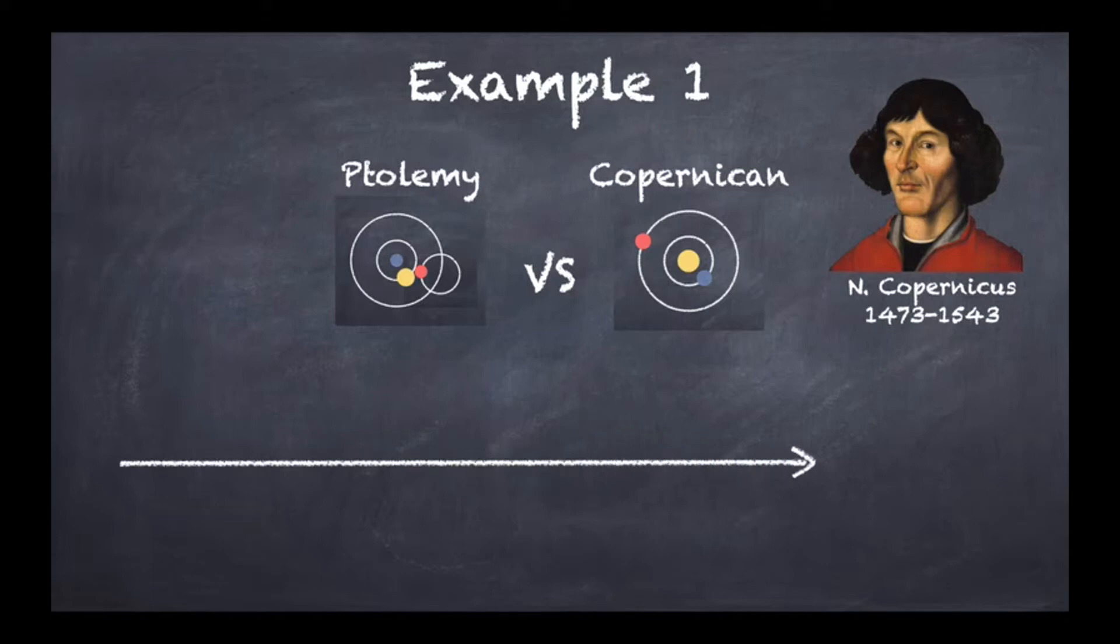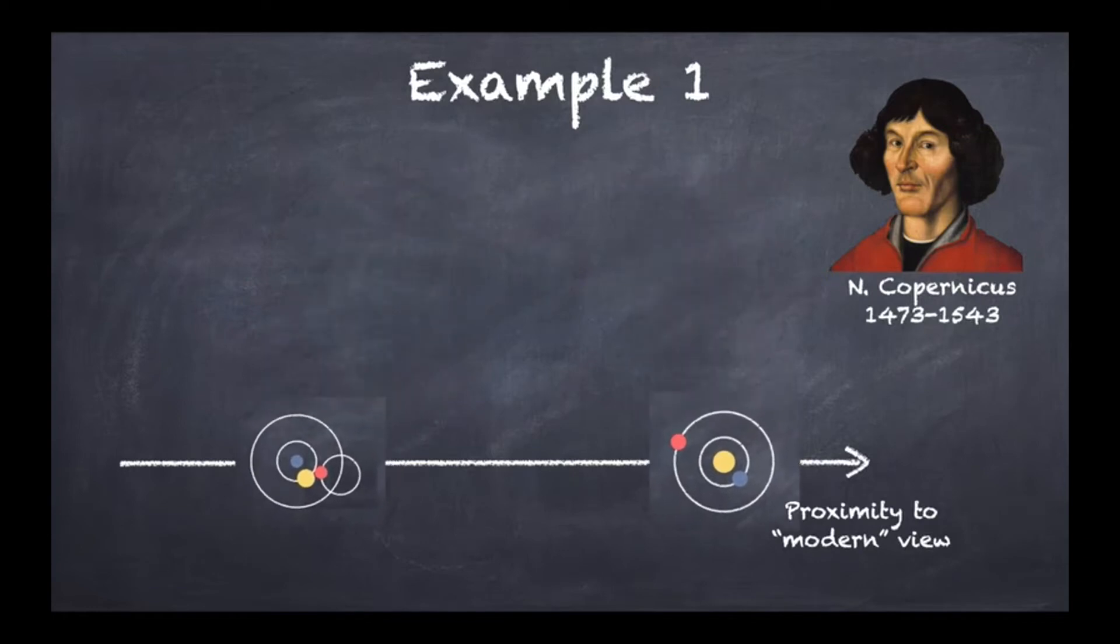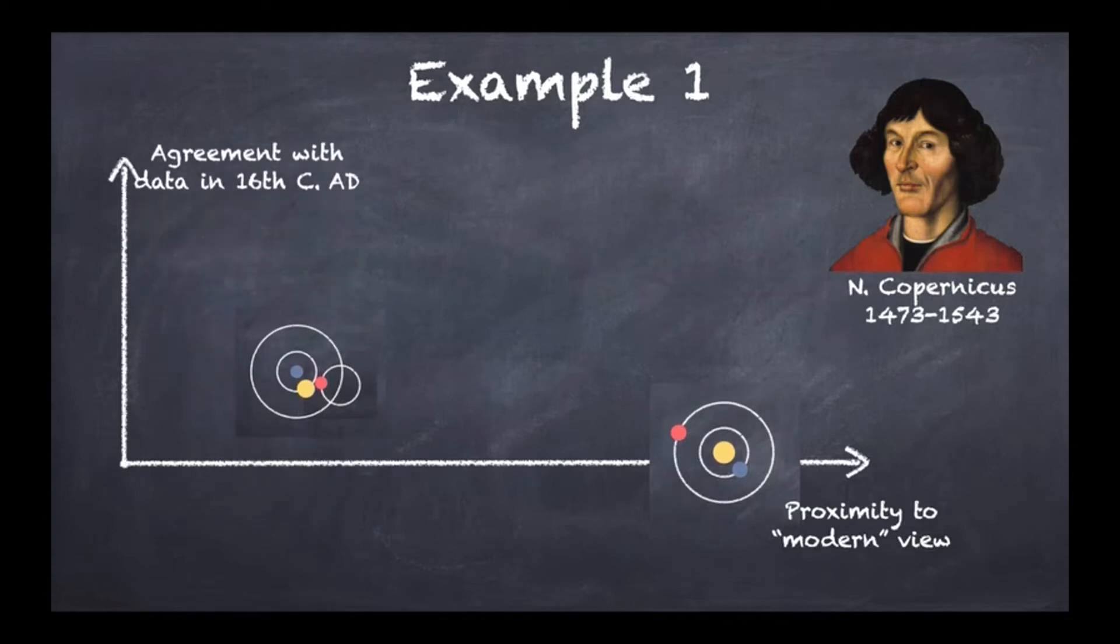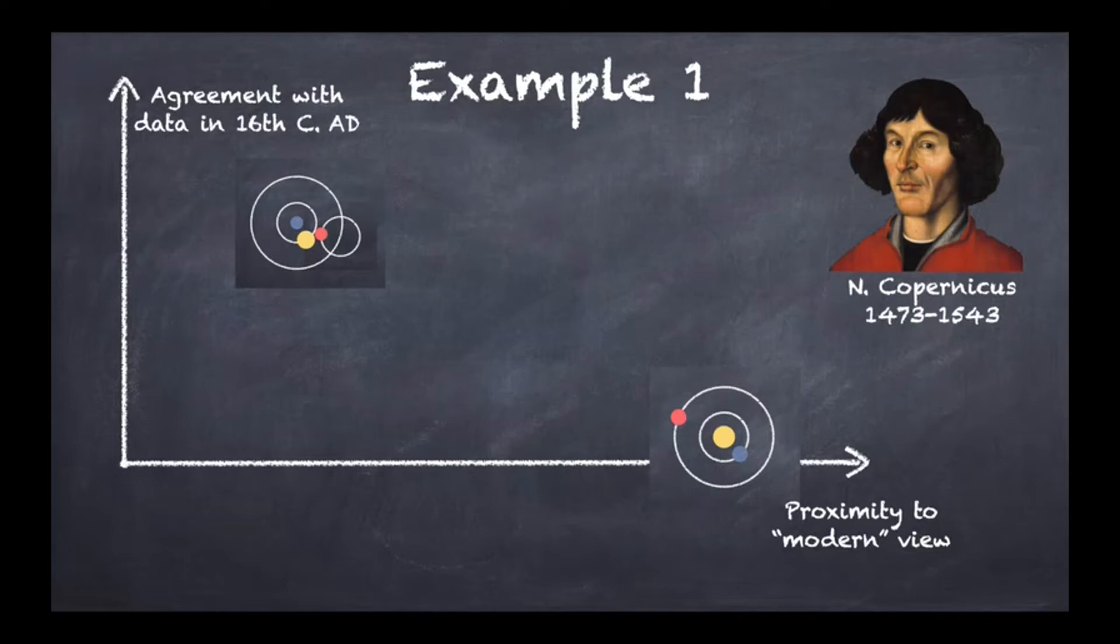If you were to draw an axis showing proximity to modern view, you would rank these two views roughly about there. But if you look at what was the agreement with data in the 16th century, you would get something different. The Ptolemaic model was much better at agreeing with data than the Copernican model. But of course Copernicus had many other reasons to believe that his model was metaphysically correct. So what did he say? Well, he agreed that the Ptolemaic model was fitting very well with observations, but when it comes to the reality of things, he basically stated 'well, it's just a theory' and in some sense I'm allowed to think about other ways of representing the world.